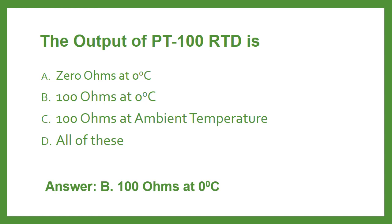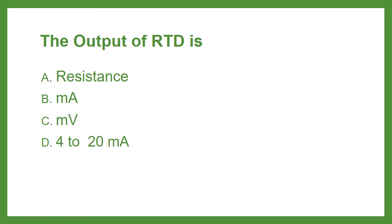The output of an RTD is: Option A Resistance, Option B Milliampere, Option C Millivolt, or Option D 4 to 20 milliampere. The answer is Option A: Resistance.